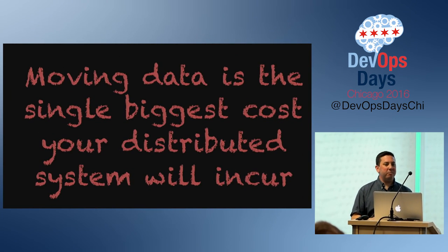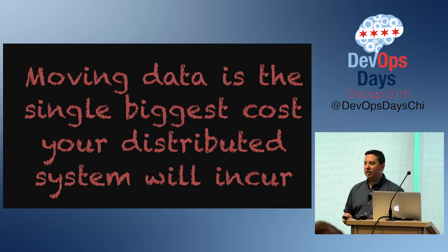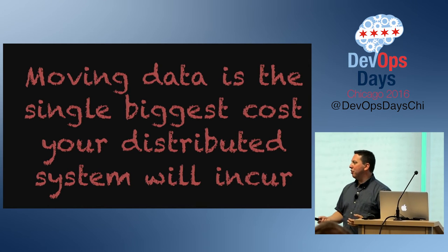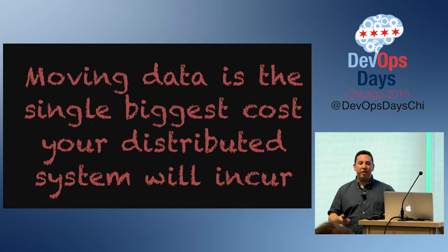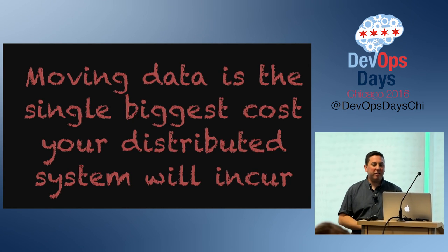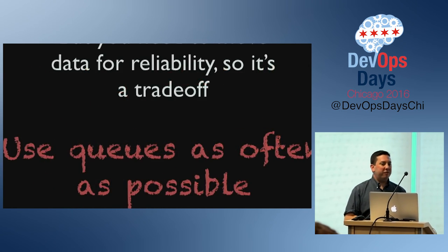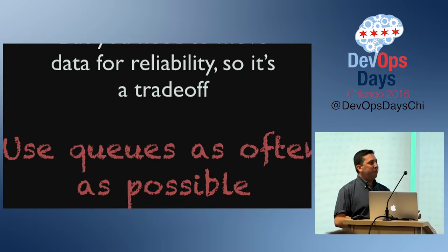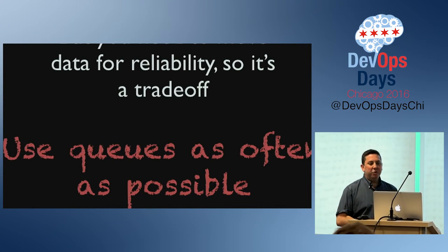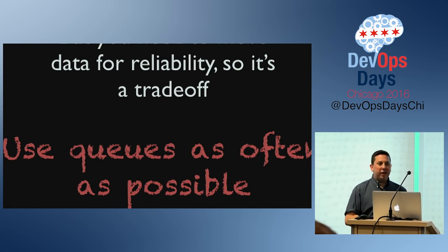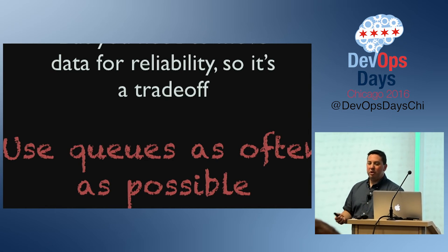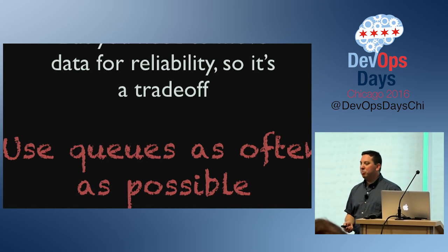In a distributed system, moving data is going to be the biggest cost — greater than any other cost. But for reliability, you need to make that trade-off. My best suggestion is to use queues as often as possible.